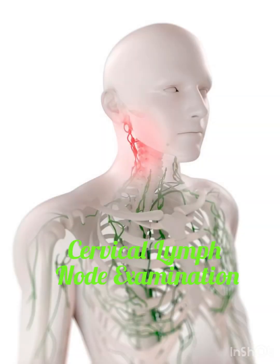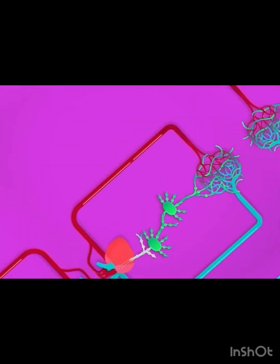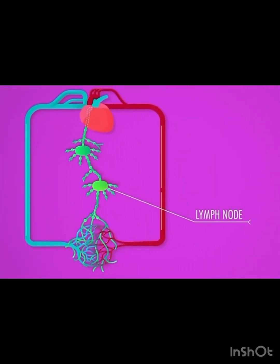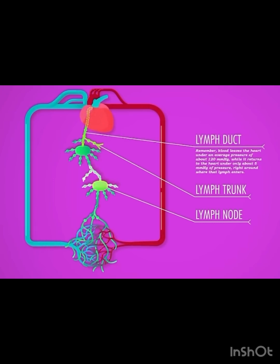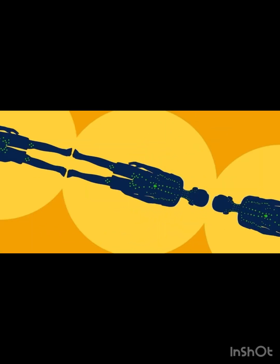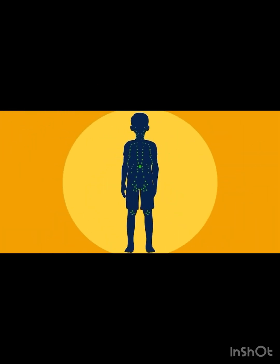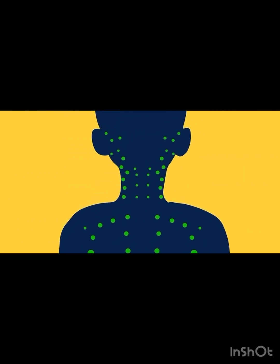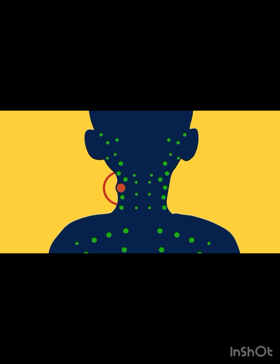Cervical lymph node examination. The lymphatic system is a network of delicate tubes throughout the body which protects us from infection and keeps a healthy balance of fluids. Swollen lymph nodes usually occur as a result of infection from bacteria or viruses, and rarely can be caused by cancer.